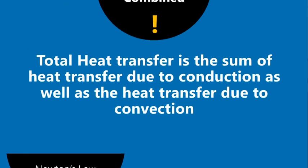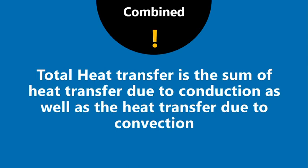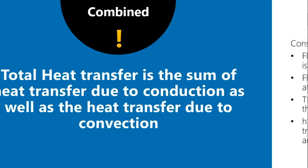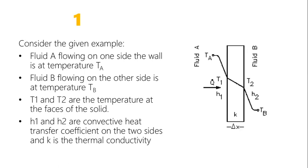Now, for the combined calculation, total heat transfer is the sum of heat transfer due to conduction and convection. Consider an example: fluid A flows on one side of a wall at temperature Ta, and fluid B flows on the other side at temperature Tb. The surface temperatures on each side of the wall are T1 and T2 respectively.